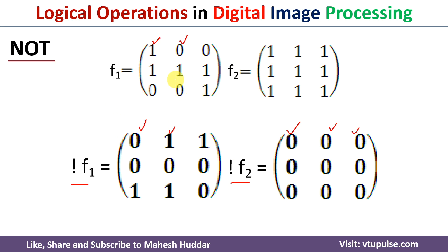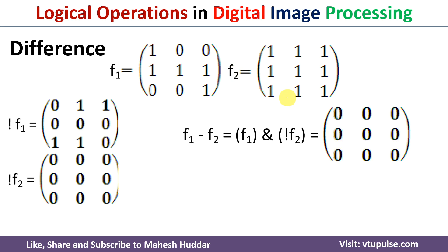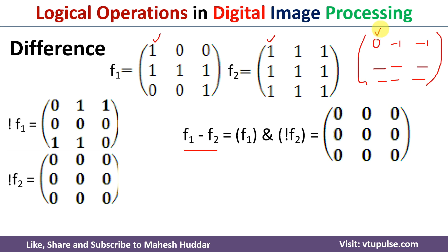The next operation is how to find the difference between two images, that is F1 minus F2. There are multiple methods. In the direct method: one minus one equals zero, zero minus one equals minus one, and so on. However, minus one is not a valid pixel value — only zero and one are valid — so minus one is converted to zero. This gives us the first row result.